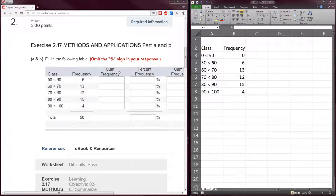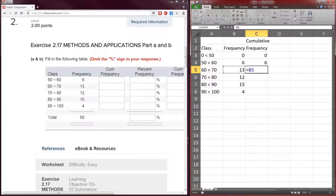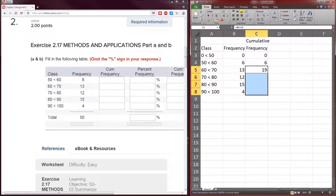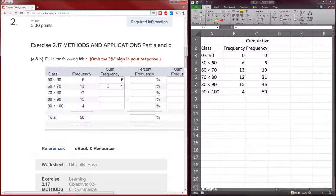First thing we need to calculate is the cumulative frequency. The cumulative frequency is just the frequency of everything from that level smaller. So let's create a column called cumulative frequency. What goes here is the value in that class plus everything less than that. So everything in that class plus everything prior. Those are the cumulative frequencies. Let's go ahead and put those in: 6, 19, 31, 46, 50.